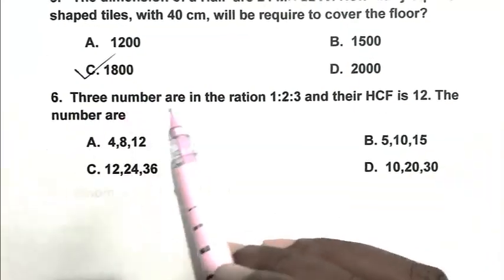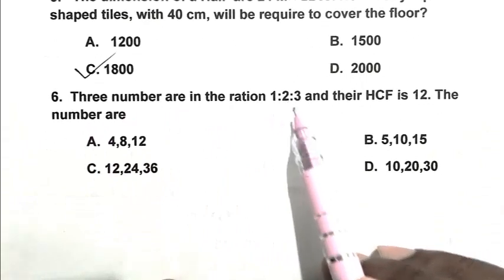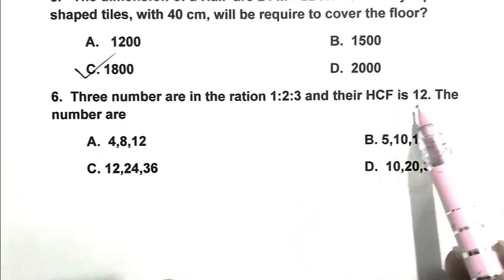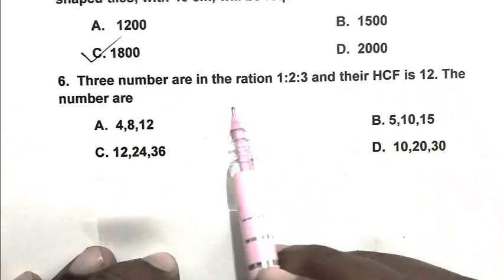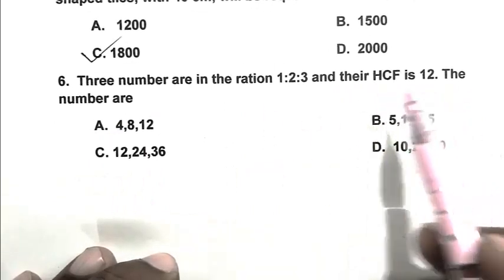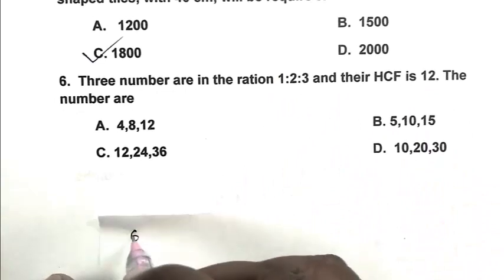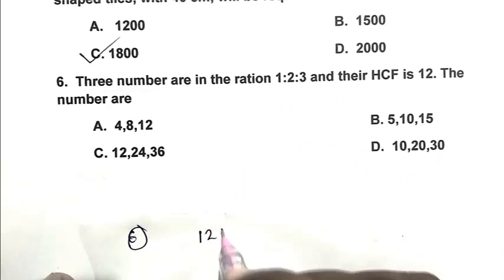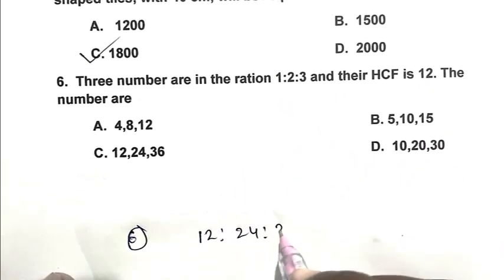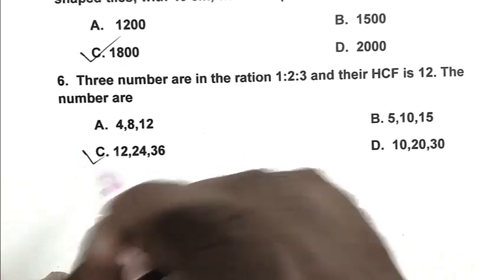Question number six: Three numbers are in the ratio 1:2:3, and their HCF is 12. The numbers are? So friend, simply we can get the numbers by multiplying 12 with the ratio. So the numbers are 12, 24, 36. So C is the right answer.